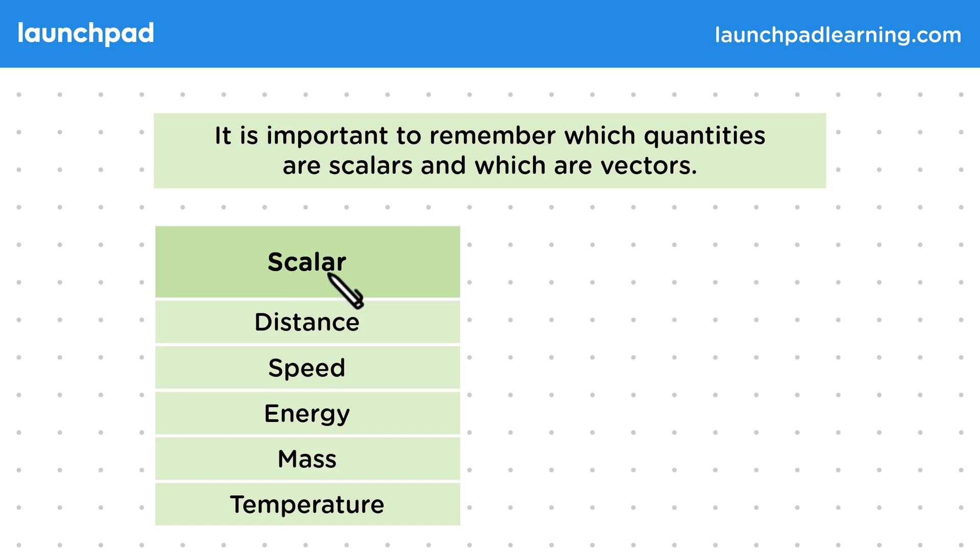Let's start with the scalars, the measures without direction. Distance is a common type of scalar. Then speed, how fast something is moving. Energy, which we can measure in various ways. And mass, how much stuff is in an object. And then temperature, how warm an object is.